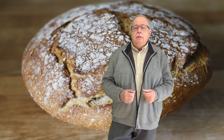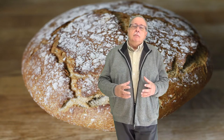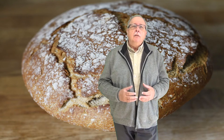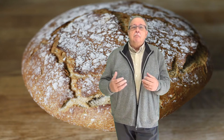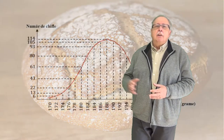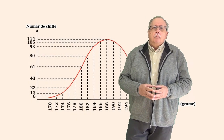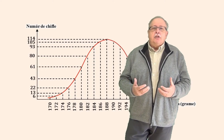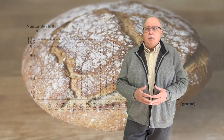A aflat că brutarul de la care își lua chiflele în vreme de război avea formele pentru aluat mai mici decât cerea legea și în felul acesta își înșela cumpărătorii. El a aflat acest lucru reprezentând numărul de chifle cu o anumită masă în funcție de masa chiflelor și a obținut graficul pe care îl vedeți în această imagine. Profesorul i-a spus brutarului că dacă nu își schimbă formele cu forme corecte, cinstite, îl va denunța la poliție.